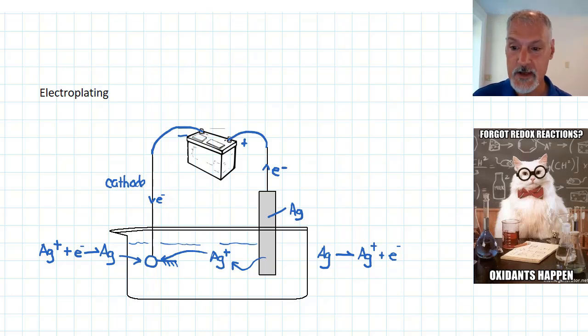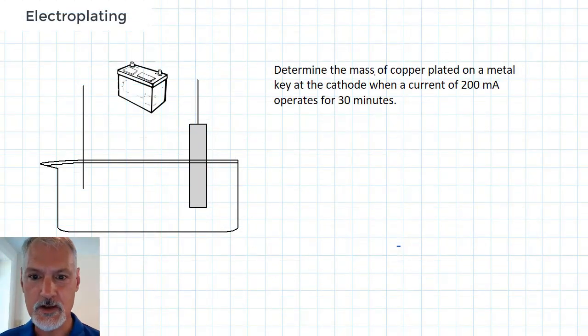So that brings us to the end of the redox unit. In our next program, we'll take a look at cell calculations. In this particular question, I'm going to start off with determining how much copper is plated on a metal key that I'm plating.